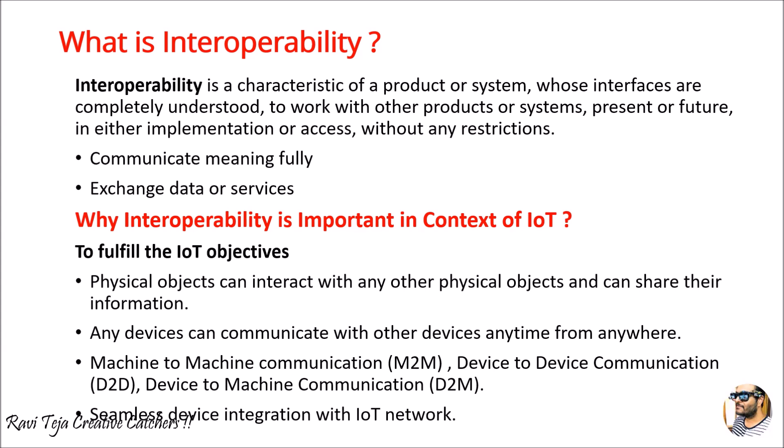Let us assume there are two machines — some electronic or electrical products connected to the internet, or systems. Currently in real time or for future purposes, in order to have access between these two systems, exchange data, or work for a particular application, we need proper communication between these systems or machines. Interoperability is nothing but the operational ability between two products, machines, or systems, such that they communicate meaningfully and can exchange data or services.